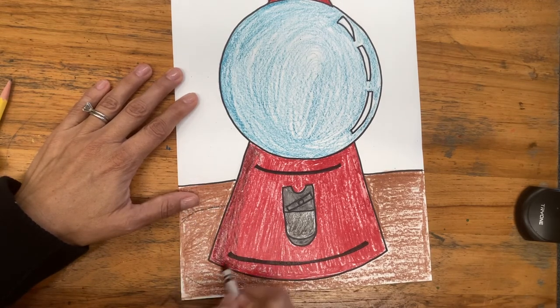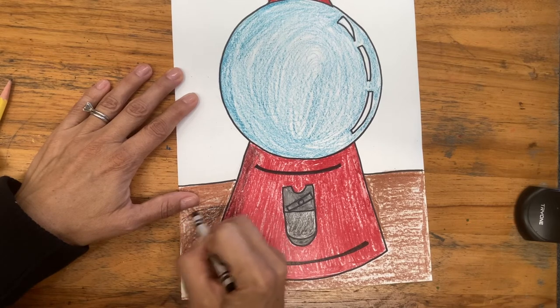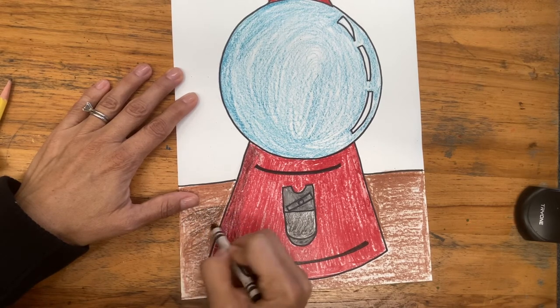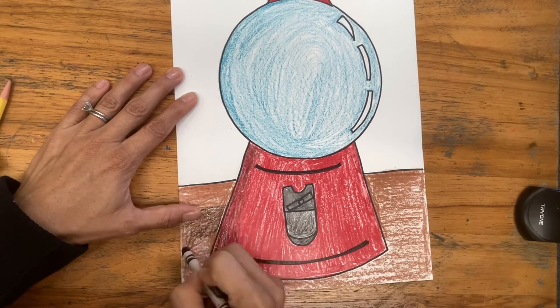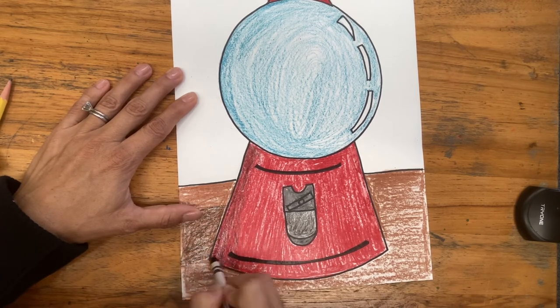And then I can also put a shadow onto the table. So maybe I just kind of have a shadow there that I lightly add that color to the table top.